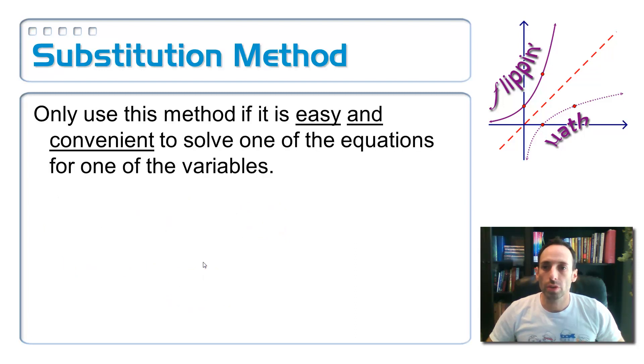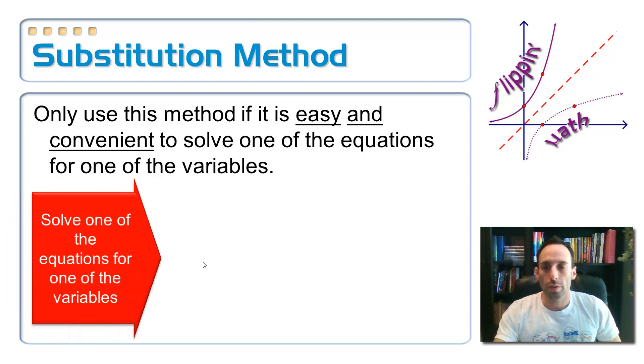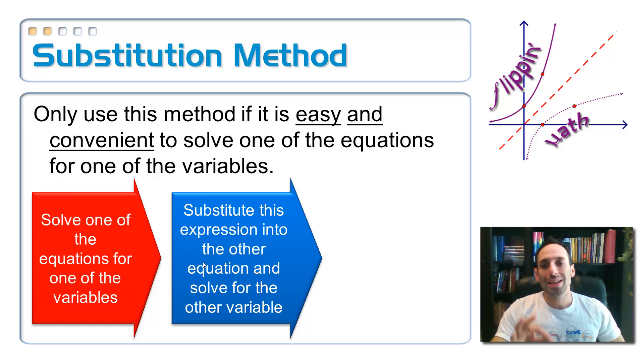So whenever I go to solve a system of equations by substitution, I only want to do it if it's easy and if it's convenient to do so. I want to first solve one of the equations for one of the variables. That's step one. Solve one of the equations for one of the variables. Whichever one's easiest, solve it for either x or for y. Now I'm going to take this expression and substitute it in for that variable in the other equation. And that's going to get rid of that variable. And now I just have 1 and I have to solve for that variable.